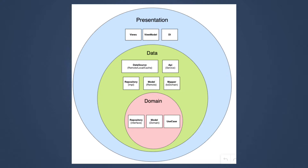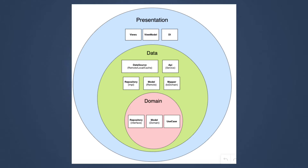As you can see in this picture, each bigger circle can access the smaller one. The domain layer cannot access any other circle because it is the smallest one. The data layer can access the domain layer but it can't access the presentation layer. The presentation layer, which is the largest circle, can access the data layer and the domain layer.